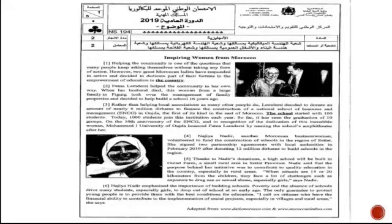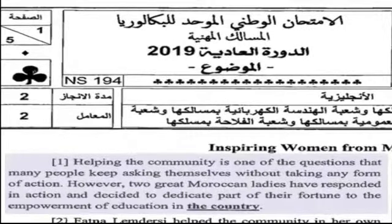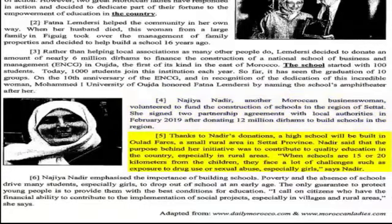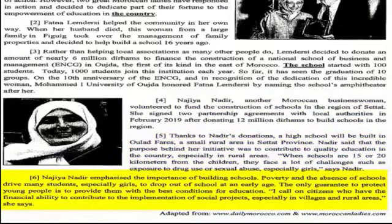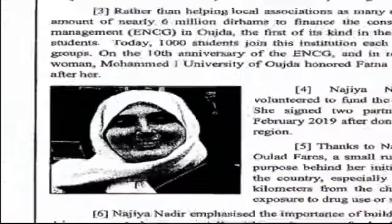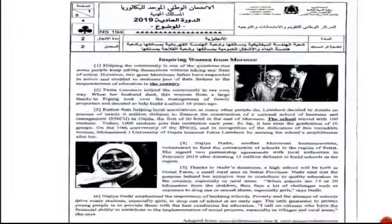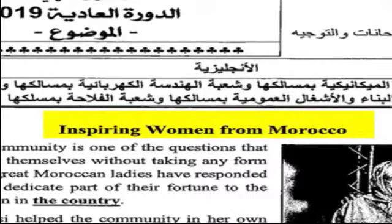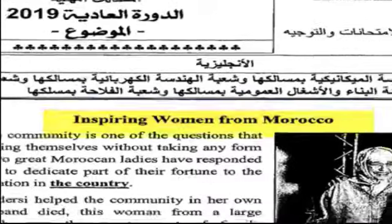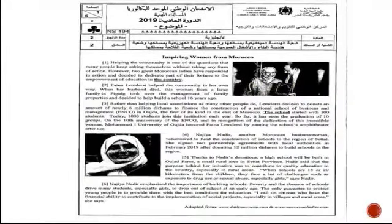As you can see here, we have a text composed of six paragraphs. The first thing you have to bear in mind is how many paragraphs you have. The second thing is to have a look at the pictures or photos. The third thing is the title of the text — here the title is 'Inspiring Women from Morocco.' Now we are going to go into detail with the comprehension questions you will have in the national exam.